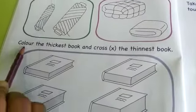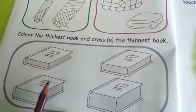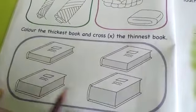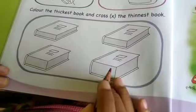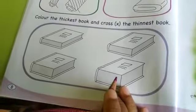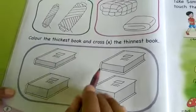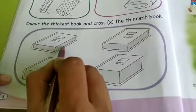Now color the thickest book and cross the thinnest one. Among all these four which one is the thick one? You will color that and then cross the thinnest. That means among all these four the thin one is which? I think this is the thinnest. So you will put a cross to it.